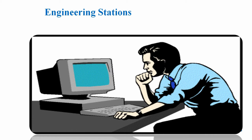We also have servers in the DCS. We have different servers, like the historian server, which saves trend records and alarm histories. We also have an OPC server there. All these concepts will be covered in the next lecture, where we will talk in detail about what types of servers we have in the DCS and what the OPC server is.